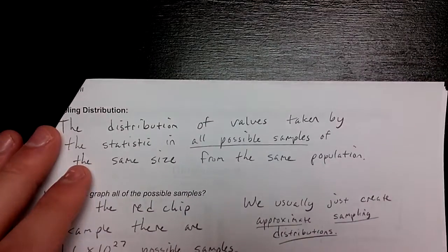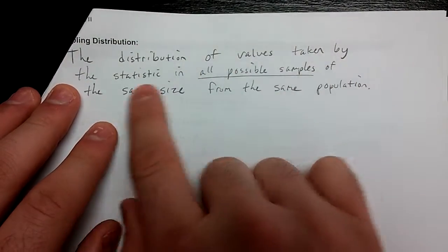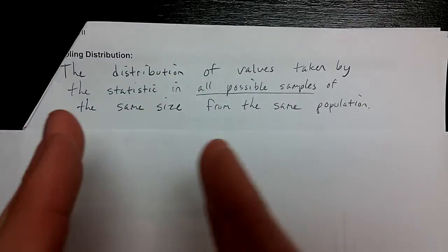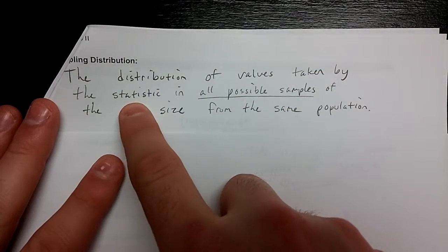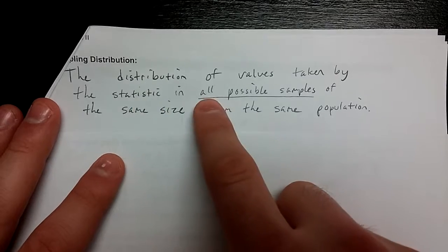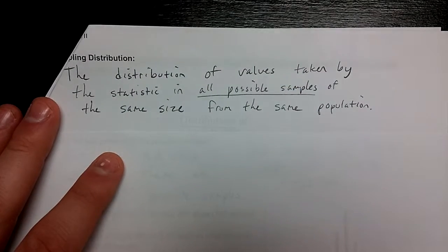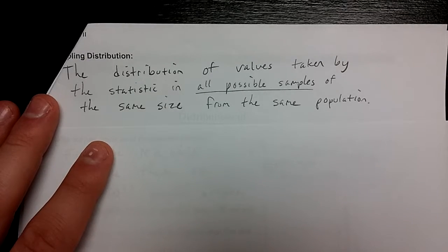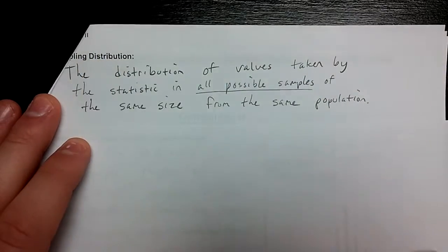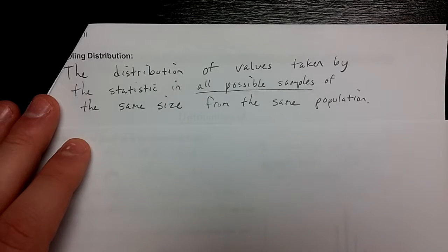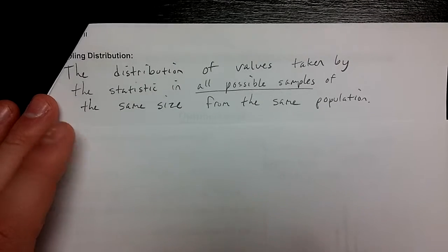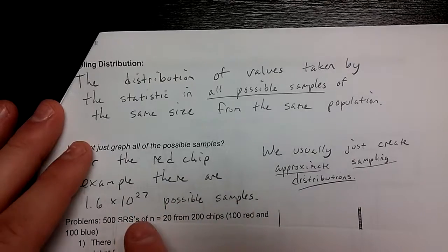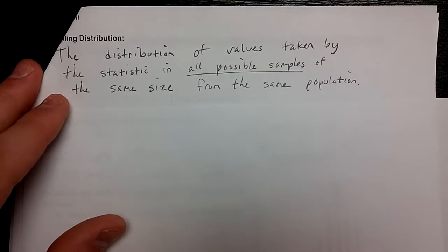So the sampling distribution is a distribution of values taken by the statistic in all possible samples of the same size from the same population. I want to clarify some things. The distribution of values just means all the different possible values that p hat can take on, taken by the statistic, which is either p hat or x bar, in all possible samples. I've underlined that because that's not going to be possible for you to do. For that example, you have too many possible samples for a human being to actually take out of a 200 chip bag. So you're going to approximate the sampling distribution with a few samples. It could be 100 samples, 200 samples, 300 samples. But you can't do the number of samples that are possible because it's way too big of a number. It actually is 1.6 times 10 to the 27th possible samples. So that's a billion, billion, billion. You're never going to be able to achieve that.